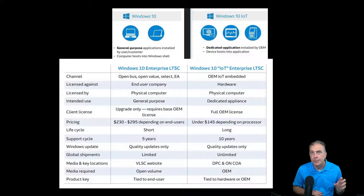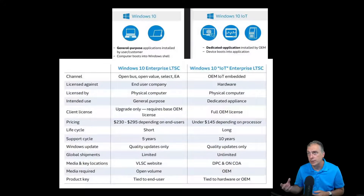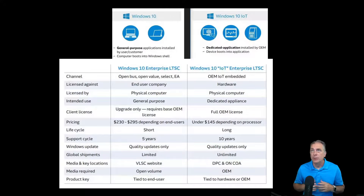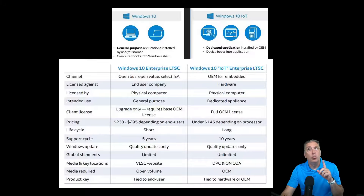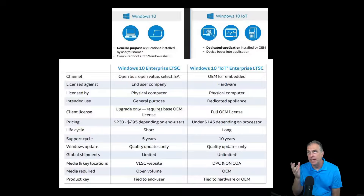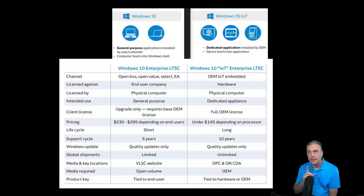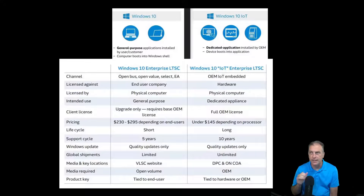For media and key: open volume uses the volume licensing service center, while OEM IoT uses the device partner center, or the key is on the COA sticker or requested separately. The main point is: if you're building an appliance, use the IoT version; if you're building a general purpose box, use the non-IoT version. One last thing — when you install these products, you won't see the word IoT. That confuses people. Currently IoT is the name of the channel, not the product name. The next release in 2021, Microsoft is hinting they may add the word IoT into the installation, which should fix that confusion.